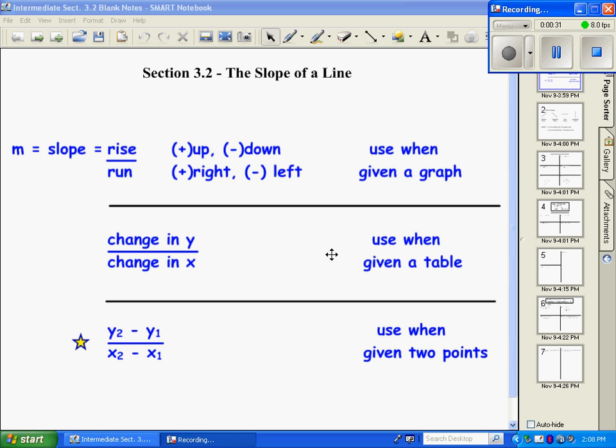When you have tables, we usually find slope by doing the change in y over the change in x. This one's probably the least used formula. And this last one is our formula when given two points. And this is the one that we use most often. I'll put a star by it. This is when you're going to have to memorize this and be able to use this one for many problems.